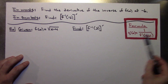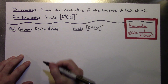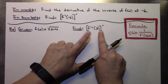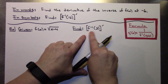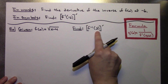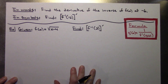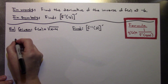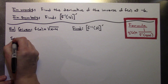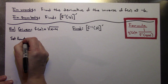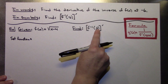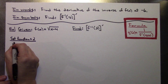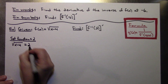In this example, they've given us a function and they're asking us to find the derivative of the inverse at 2. So our a value is 2. I'm going to start by setting the function equal to 2. So I've got the square root of x minus 4 equals 2. I'm going to square both sides to solve for x.